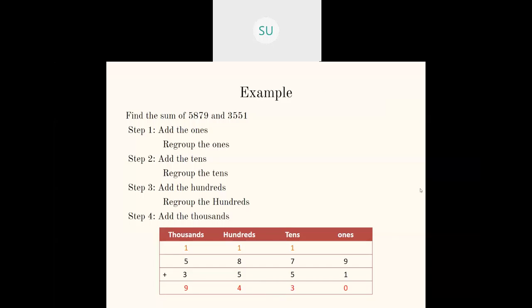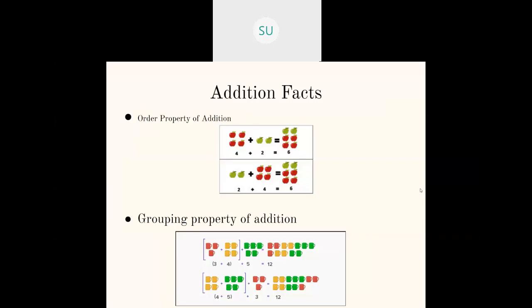Then after this we saw a few properties of addition. The first property we saw was the order property of addition, also called changing the order of two numbers. What order property says is you can arrange two numbers in any order and add them, and yet your result will be the same. For example, four plus two equals six, and also two plus four equals six.